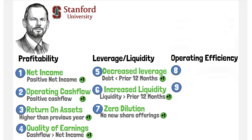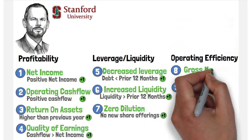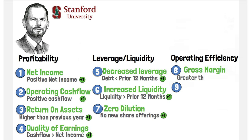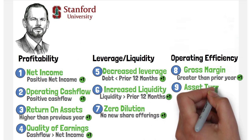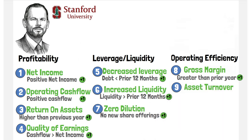Next, we have operating efficiency. If gross margin is higher than the previous year, we get one point. And finally, asset turnover: if there is a higher asset turnover ratio year-on-year, one point is given.